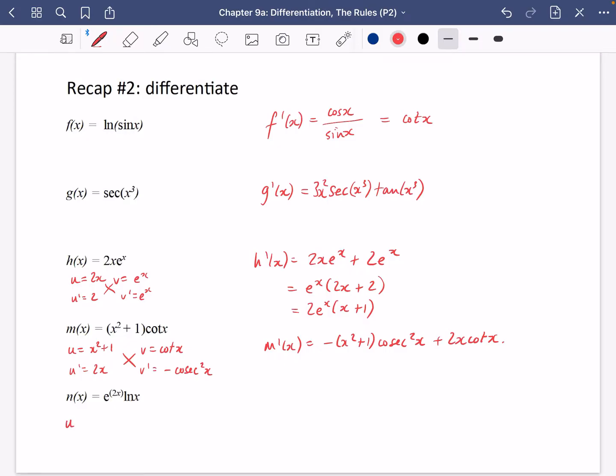We've also got another product rule here. So I have e to the 2x, don't worry about the brackets, and I have ln x. u dash is going to go to 2e to the 2x, and v dash is going to go to 1 over x. So we've got the product rule coming up.